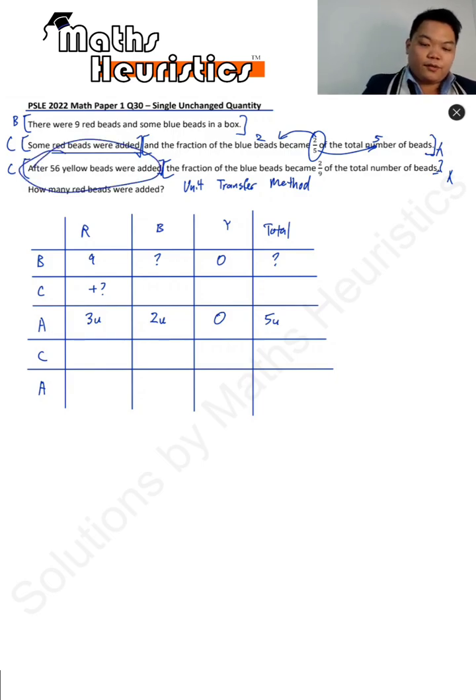So let's see what happens next. 56 yellow bits were added on. And then the fraction of the blue bits now became 2 out of a total of 9 of the number of bits. Okay, sorry. Plus 56 should be here.